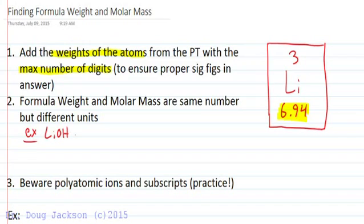Lithium hydroxide is composed of one lithium, one oxygen, and one hydrogen that we must add together to get the formula weight and molar mass. For lithium we take 6.94 from the periodic table and add it to 16.00 for oxygen and 1.008 for hydrogen.